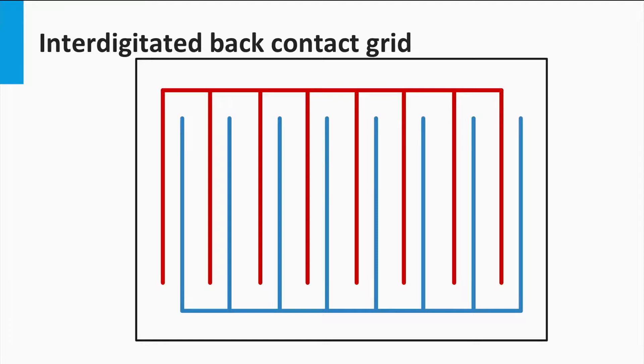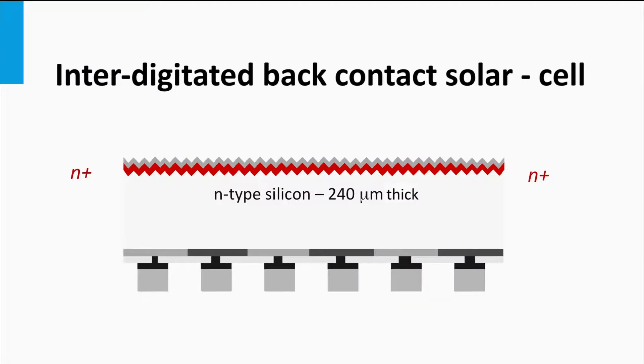At the back you have two metal grids. One collects the current of the N-type contacts, and the other collects the current of the P-type contacts.